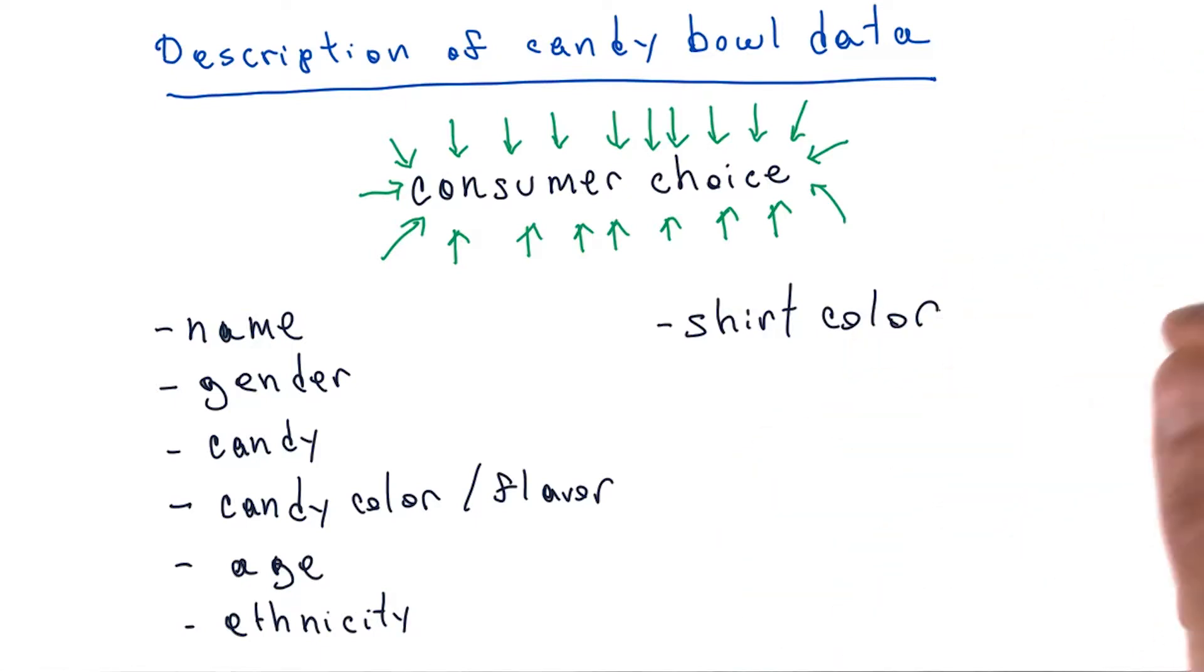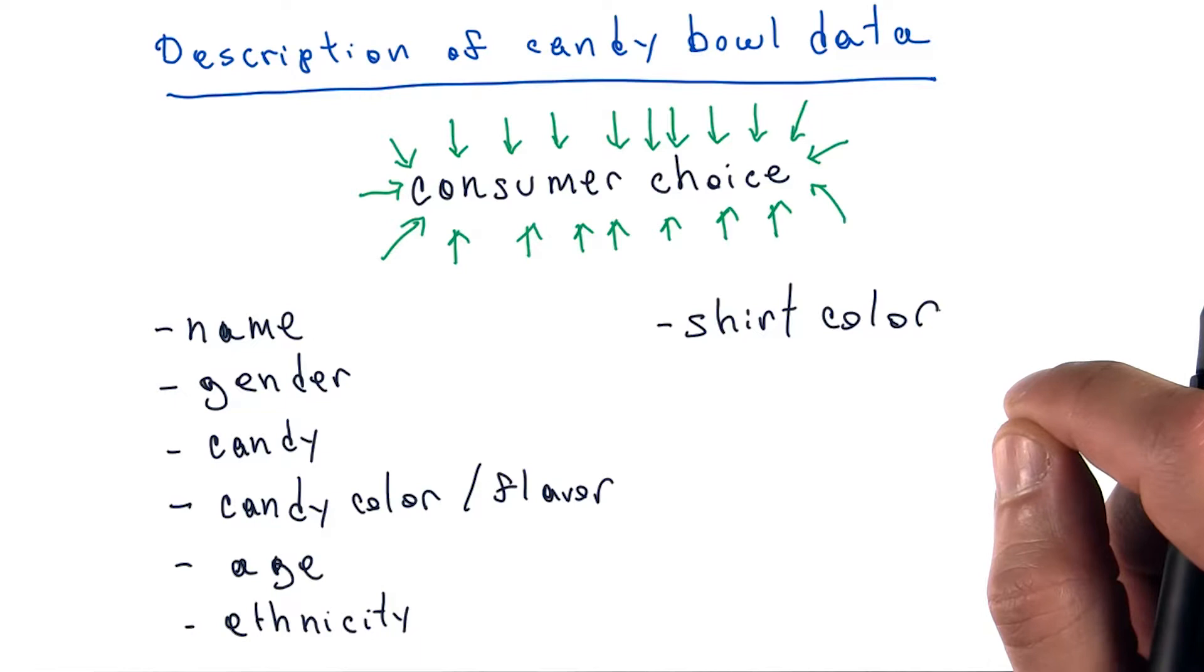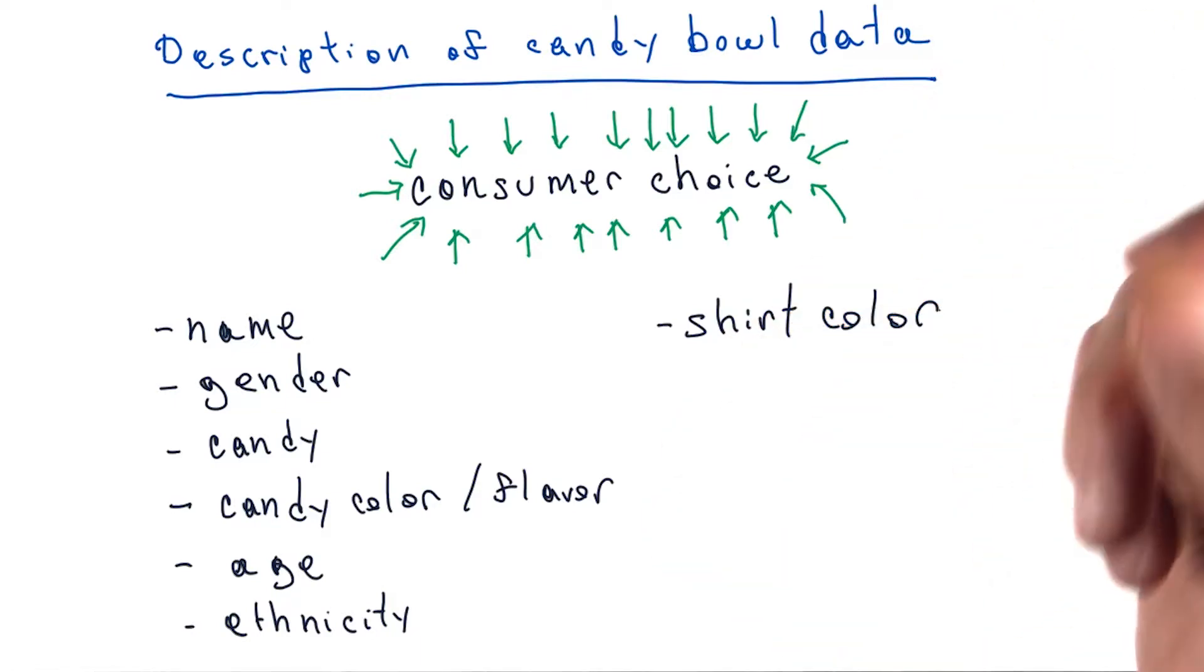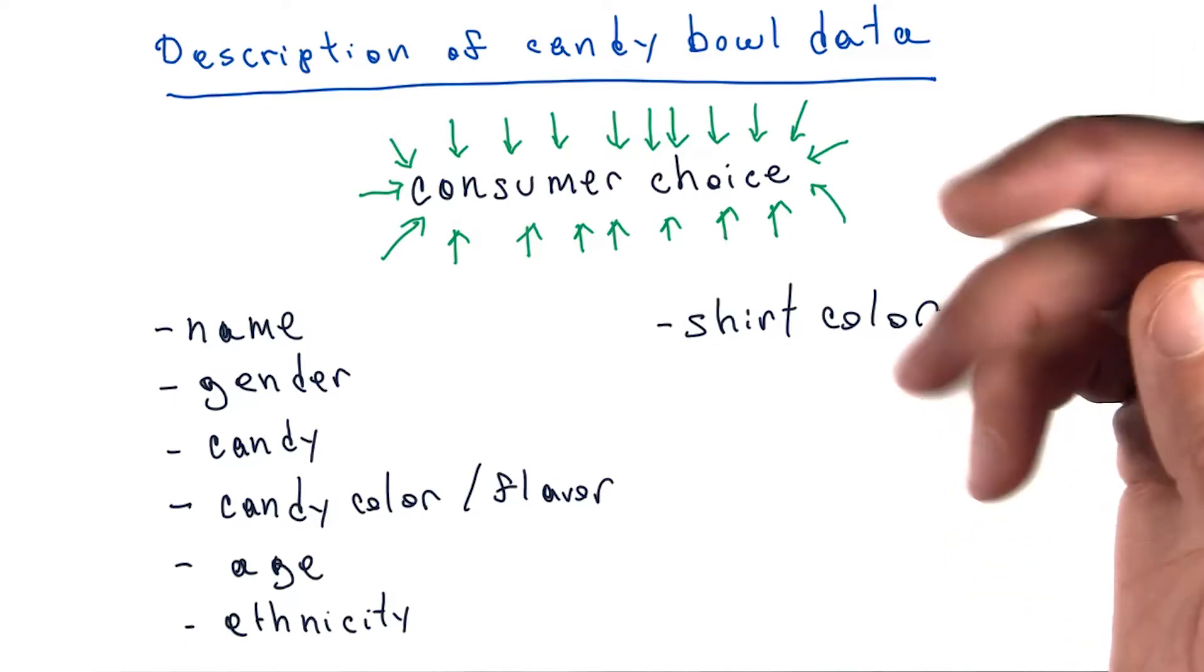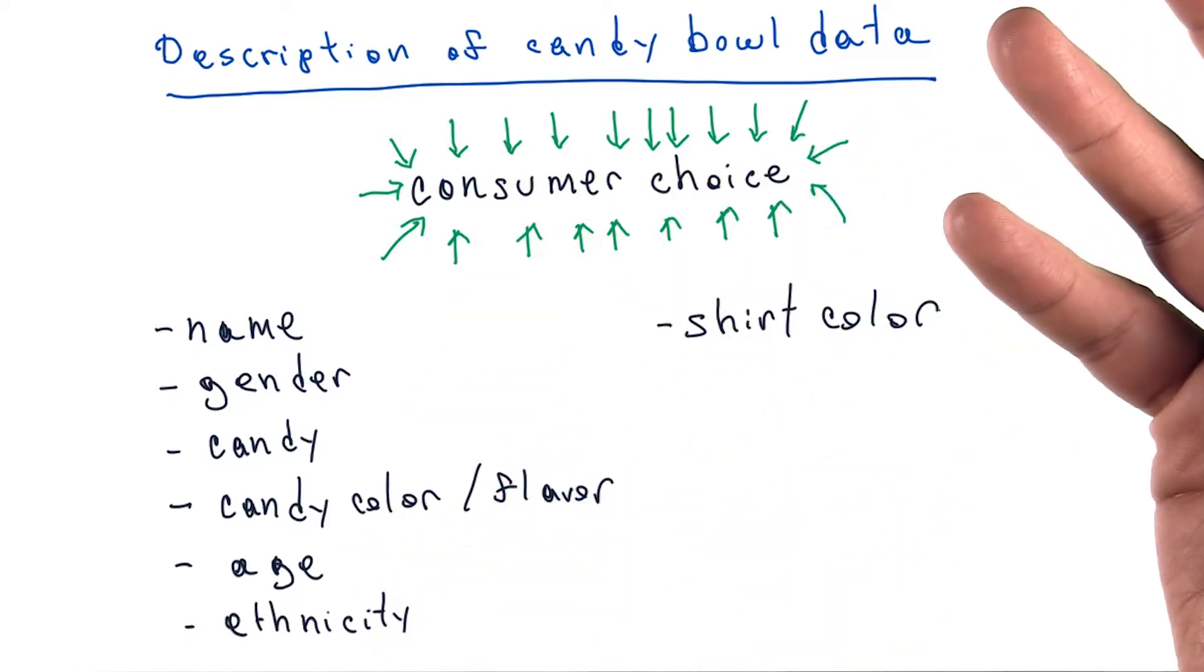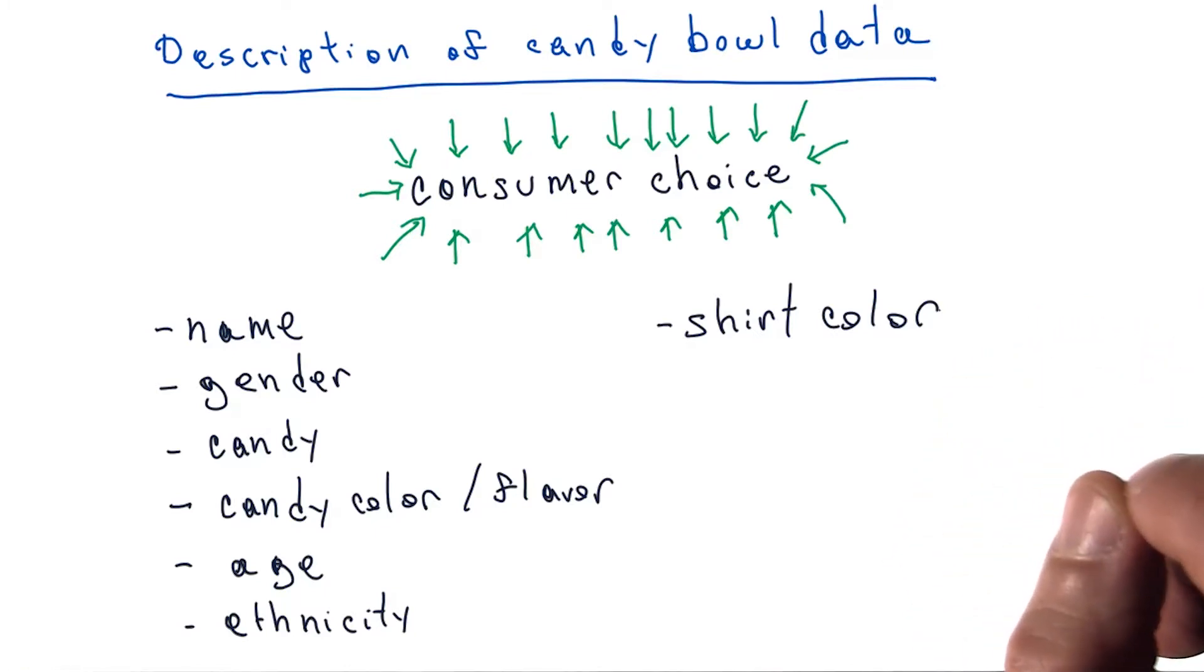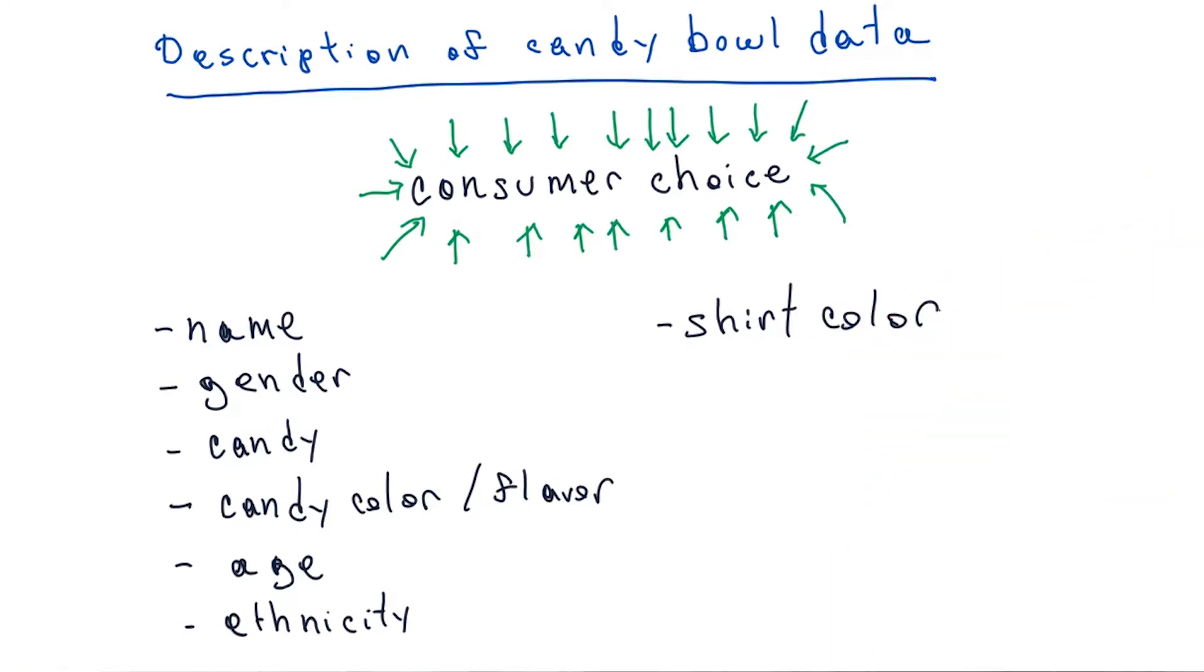I think we can all agree that shirt color shouldn't have an impact on what candy someone selects. So when we're evaluating the strength of relationships of any one of these other attributes to candy choice, we know that if it has a weaker relationship than that of shirt color, we can safely ignore it.